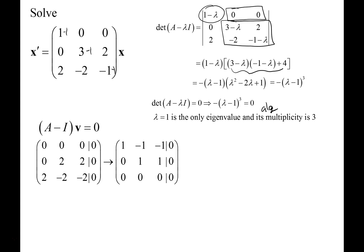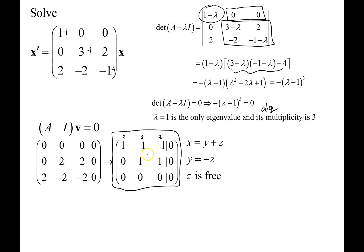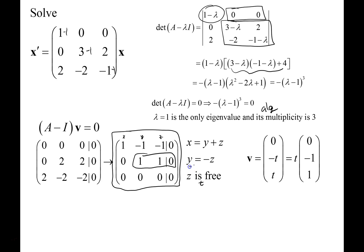We make row 3 become row 1, scale it down by a half, and scale row 2 down by a half as well. In row echelon form, with variables x, y, z, we get that z is free. From the second equation, y equals negative z. From the first equation, x equals y plus z, which gives x = 0. So the eigenvector is v = (0, −1, 1). This is the only eigenvector — geometric multiplicity is 1 while algebraic multiplicity is 3.